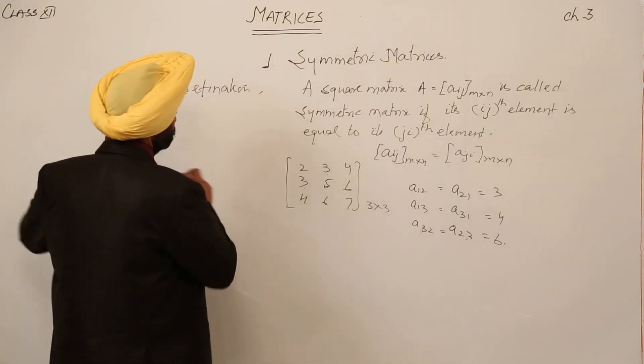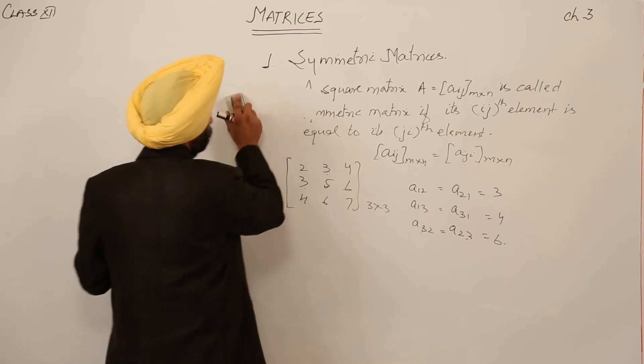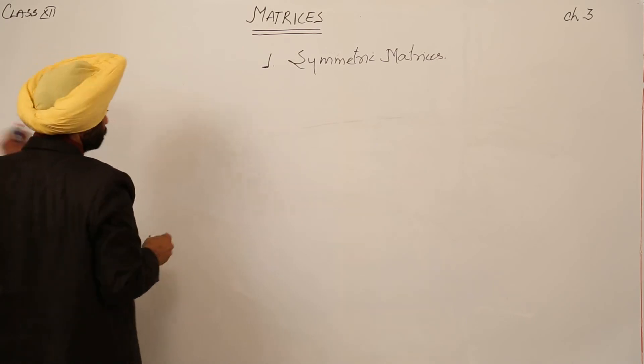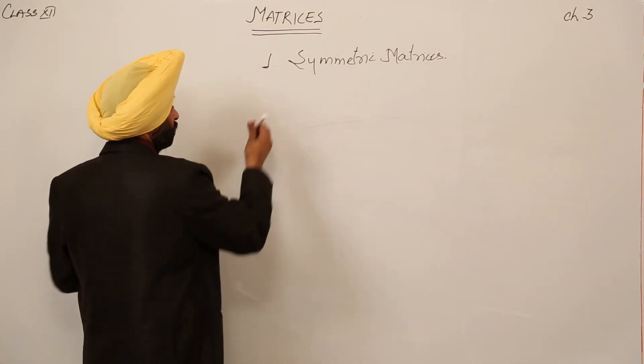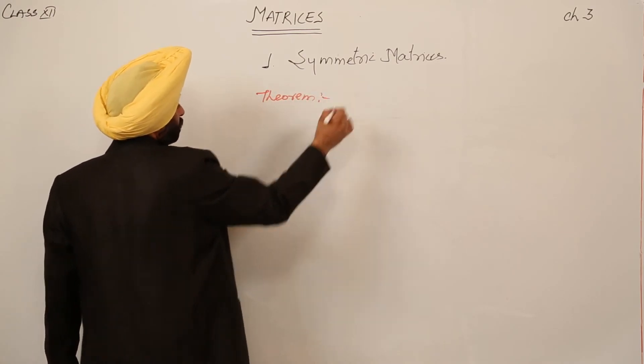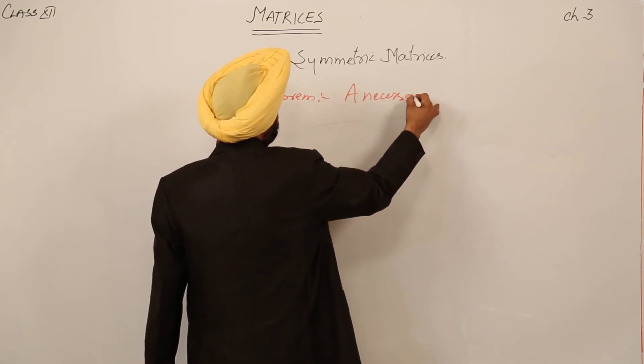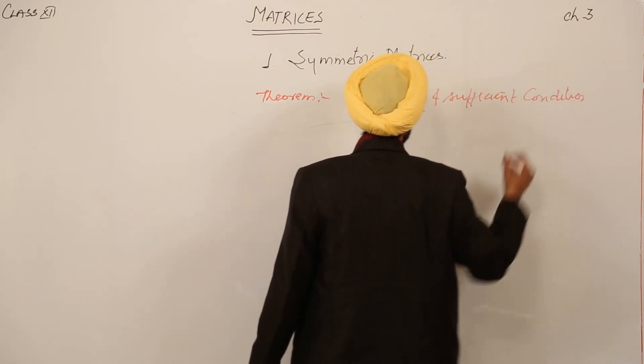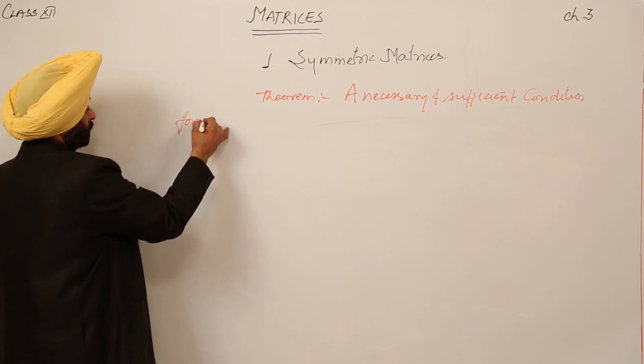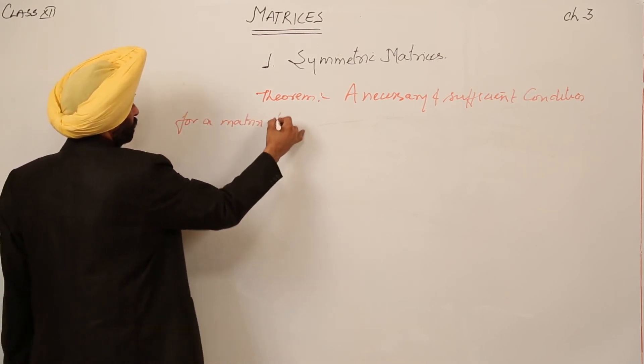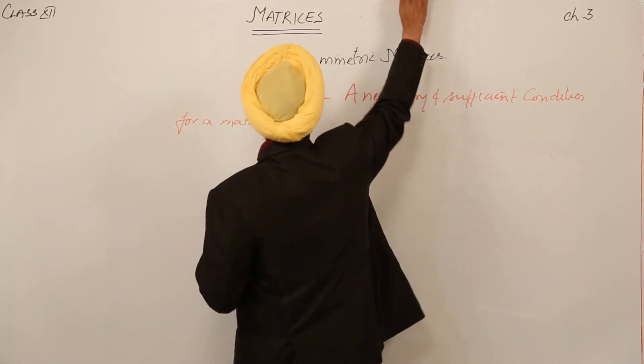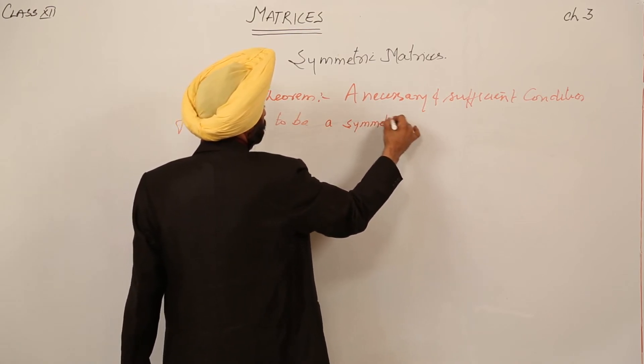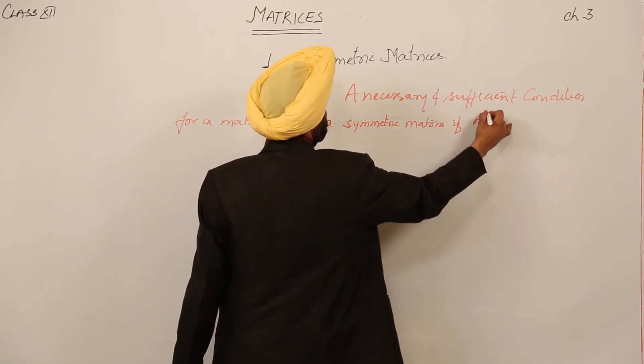This was the first condition. Second condition is we are having a very simple concept for the theorem part. We can write it as theorem. A necessary and sufficient condition for a matrix to be a symmetric matrix if A transpose is equal to A.